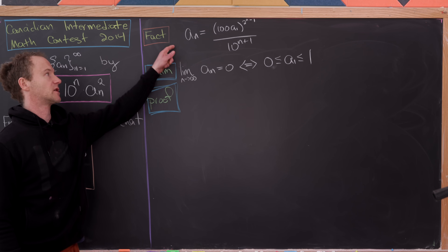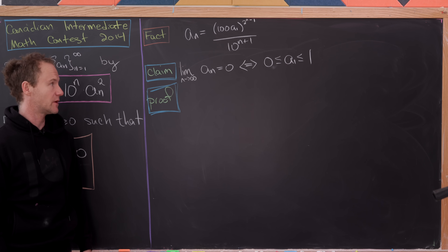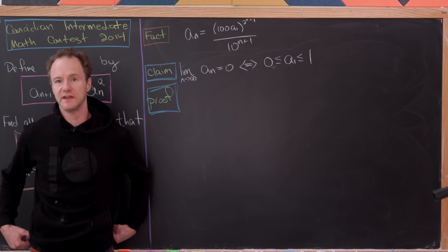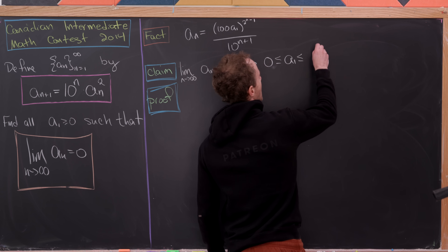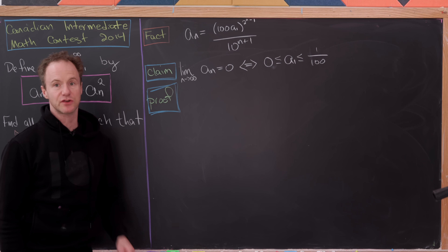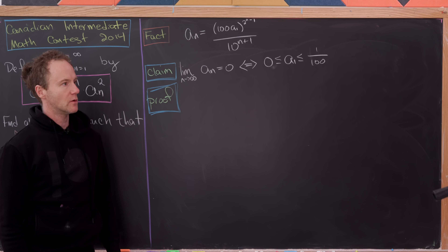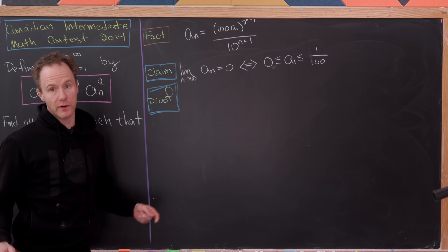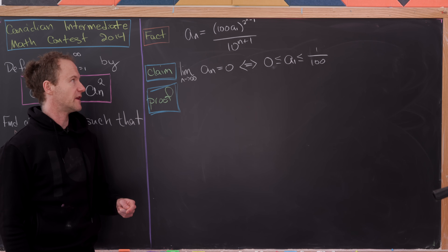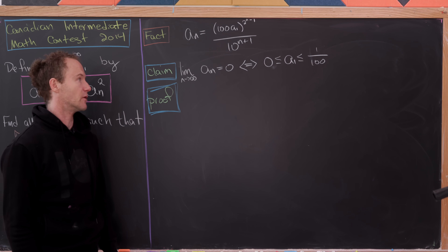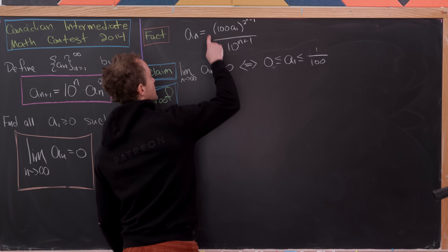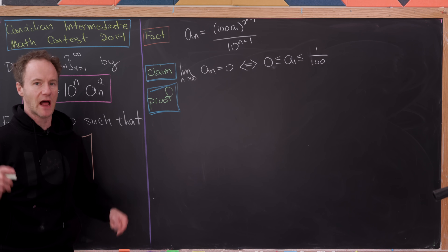Armed with the closed form, we now claim that the limit of this sequence equals 0 if and only if a_1 is between 0 and 1/100. The denominator 10^{n+1} grows without bound, so if the numerator (100·a_1)^{2^{n-1}} doesn't grow without bound — i.e., if (100·a_1) is between 0 and 1 — then the sequence clearly goes to 0.